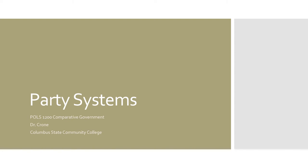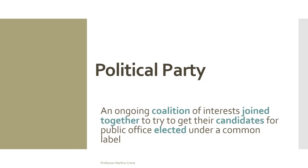Hey, it's Dr. Crone again. Welcome to our video on party systems. It's the first in a series of two videos in our Parties and Interest Groups unit. I'm sure all of you have some idea of what a political party is and what it does. I like this particular definition, and I've highlighted the words I think are important. A political party is an ongoing coalition — a group that isn't just singular. It's a coalition of interests joined together to try to get their candidates for public office elected under a common label. Parties have the goal of winning, and the way they do that is by getting candidates who support that party elected.